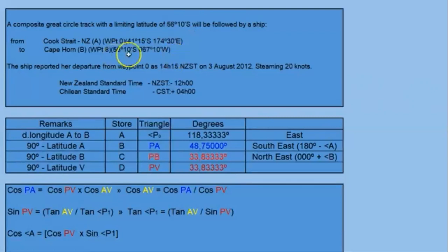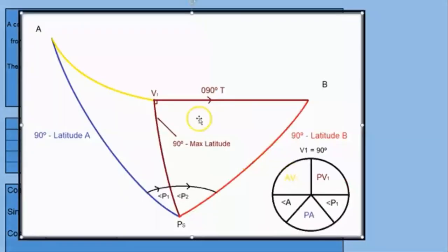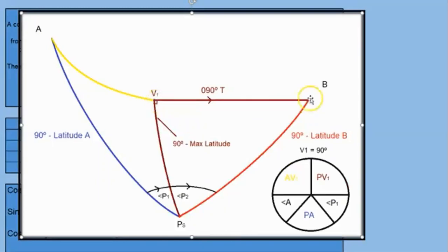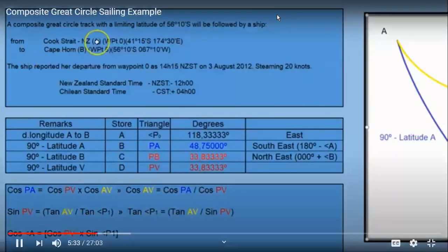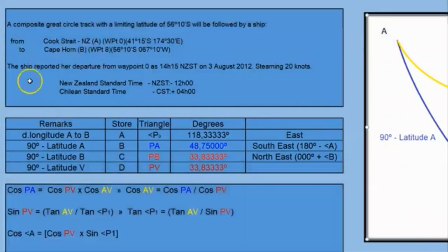The limiting latitude is 56 degrees 10 minutes south — it is the same latitude as point B. Looking at the diagram, from A we reach the maximum latitude, then start rhumb line sailing at course 090 along the parallel of latitude to reach point V2, and B has the same latitude. We will start solving this using Napier's rules and triangles.